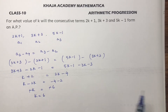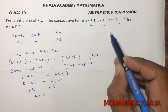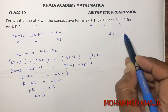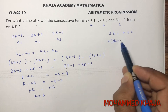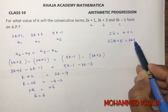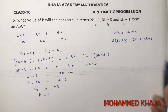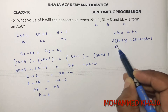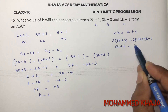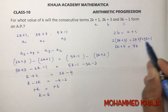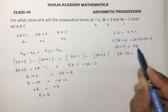You can also do this problem using another method. If A, B, C are three terms of an AP, you can use the formula 2b equals a plus c. So 2 times (3k+3) equals (2k+1) plus (5k-1). That gives 6k+6 equals 7k, since 1 and minus 1 cancel.